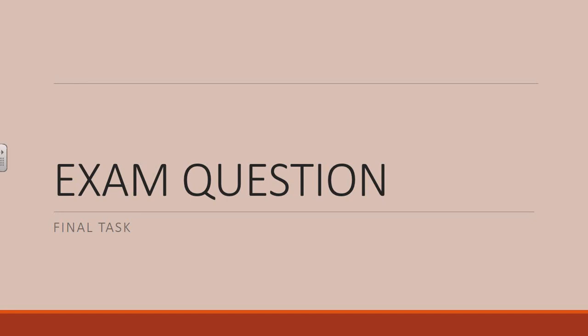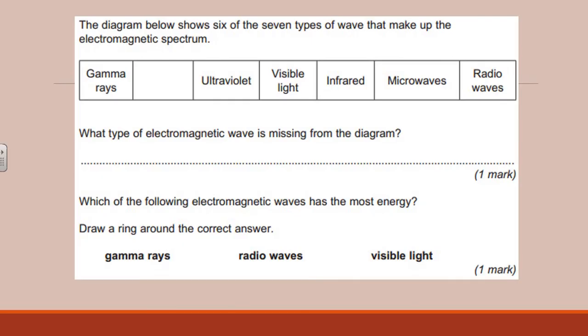The final task is just one short exam question just for you to have a go at, just consolidating everything you've done. This is the question. So it's two parts, just two marks. The diagram shows six of the seven types of waves that make up the electromagnetic spectrum, which is missing, and which of the following waves has the most energy? So I'd like you to attempt this question with all your notes closed, just to see what you've retained. Obviously, there isn't a lot there for you to do in terms of the exam question, but just to see if you can remember those key bits.